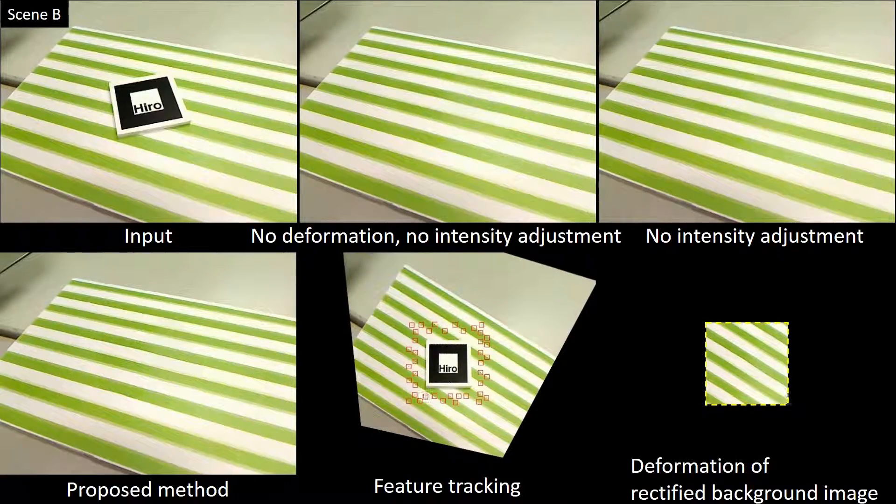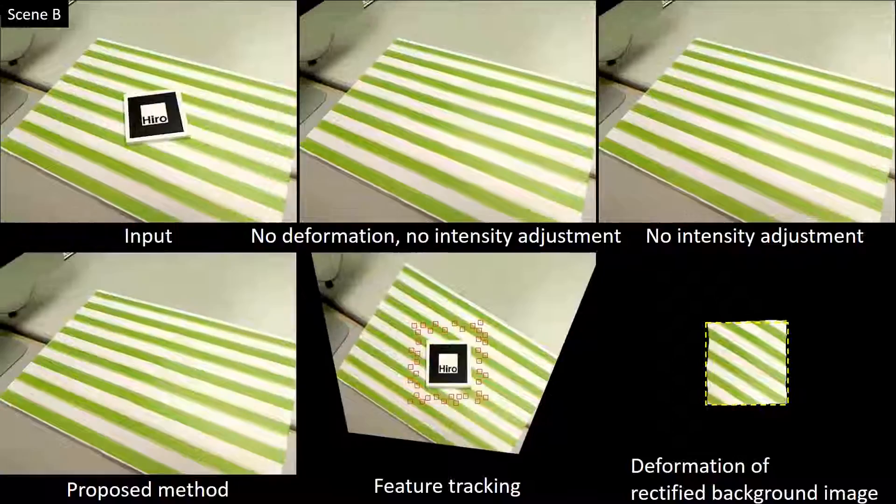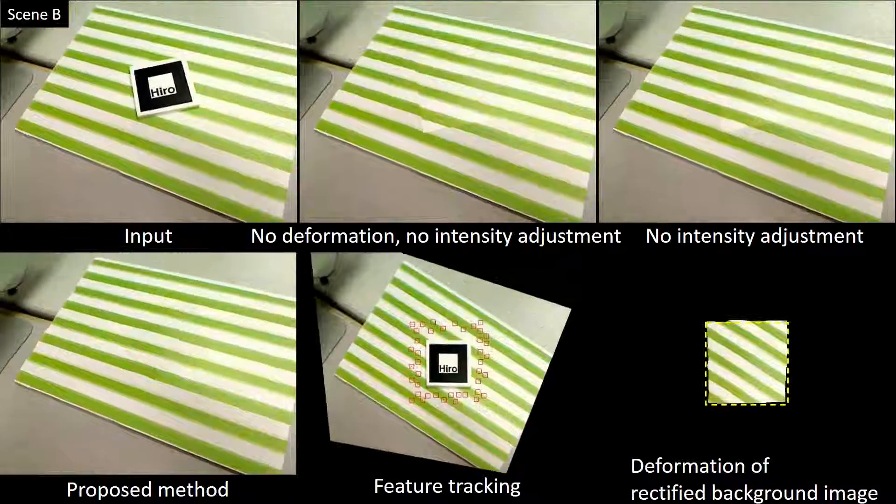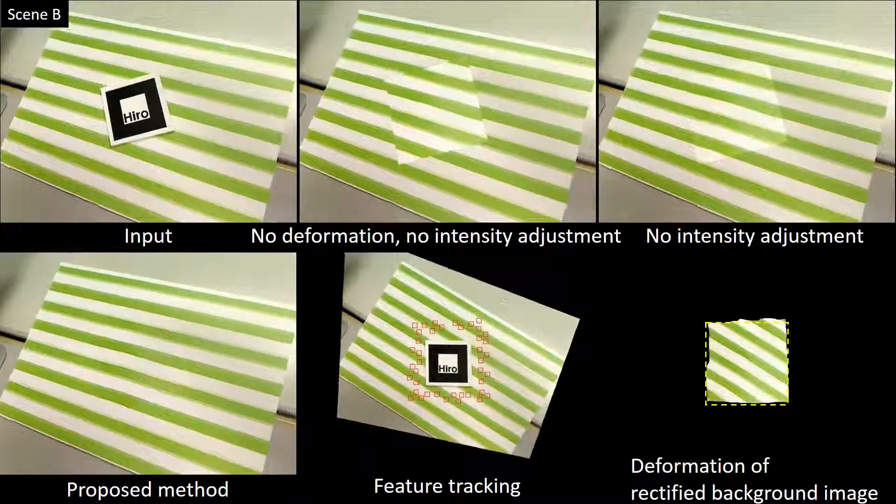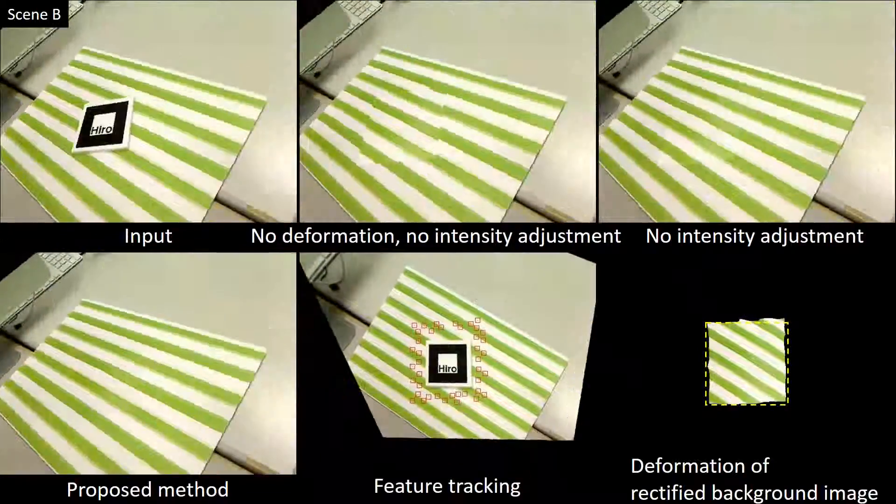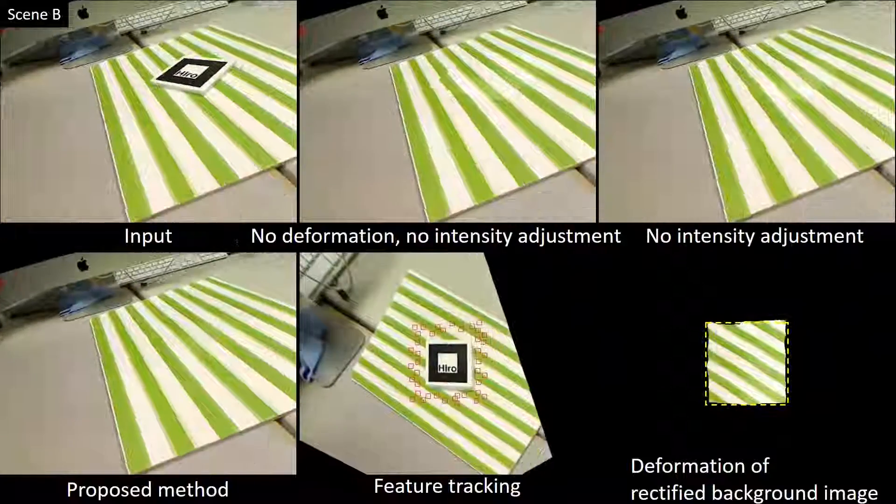In scene B, the marker is placed on a planar geometry with a stripe pattern. Displacement of the texture occurs with a baseline approach because the marker base is thick. For such a stripe pattern, our method does not always track feature points accurately in the rectified background image because of the aperture problem.